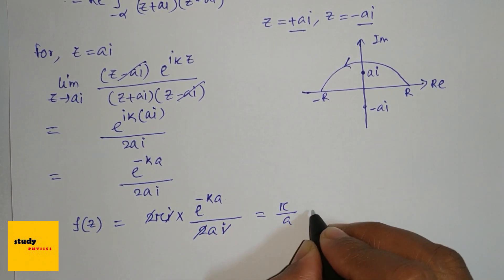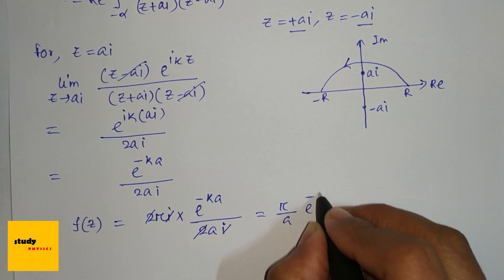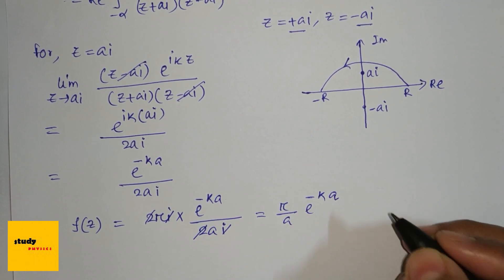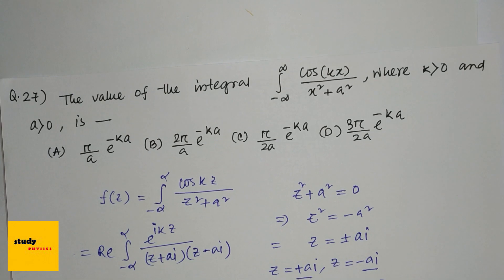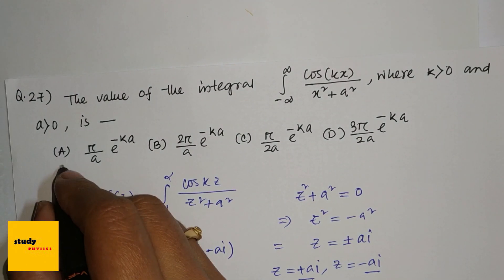So the answer is π/a times e^(-ka), which means the correct option is option A.